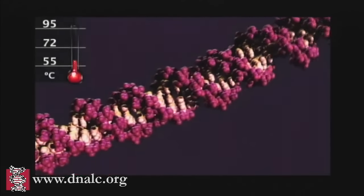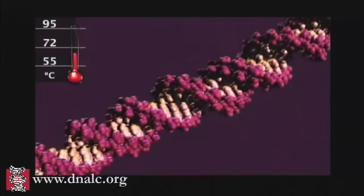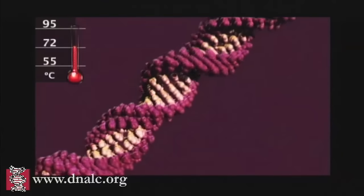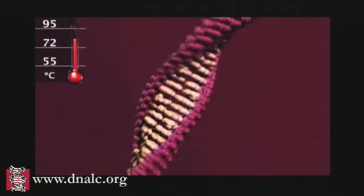Polymerase chain reaction, or PCR, uses repeated cycles of heating and cooling to make many copies of a specific region of DNA.